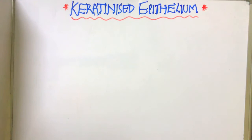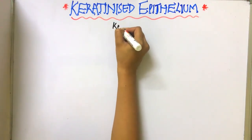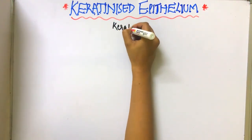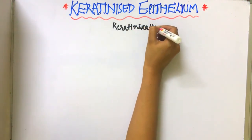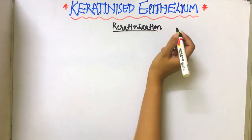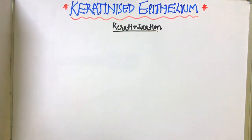First of all, let us study what keratinization is and the process of keratinization. The keratinocytes are arranged in different layers, and they undergo mitosis.